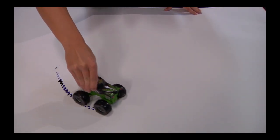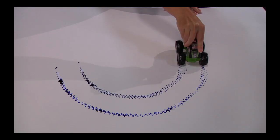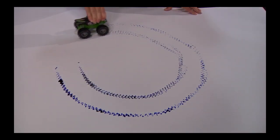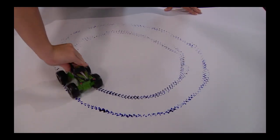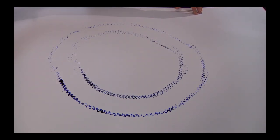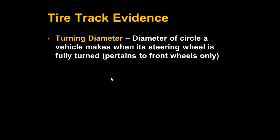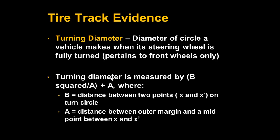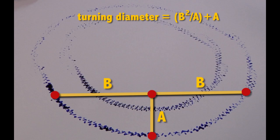If you have a circular tire track pattern, you can determine the vehicle's turning diameter. This is the diameter of the circle that the vehicle makes when the steering wheel is fully turned. The turning diameter can be calculated using the equation B squared divided by A plus A, where B is the distance between two points on the turn circle, and A is the distance between the outer margin of the circle and a midpoint between those two points on the circle.